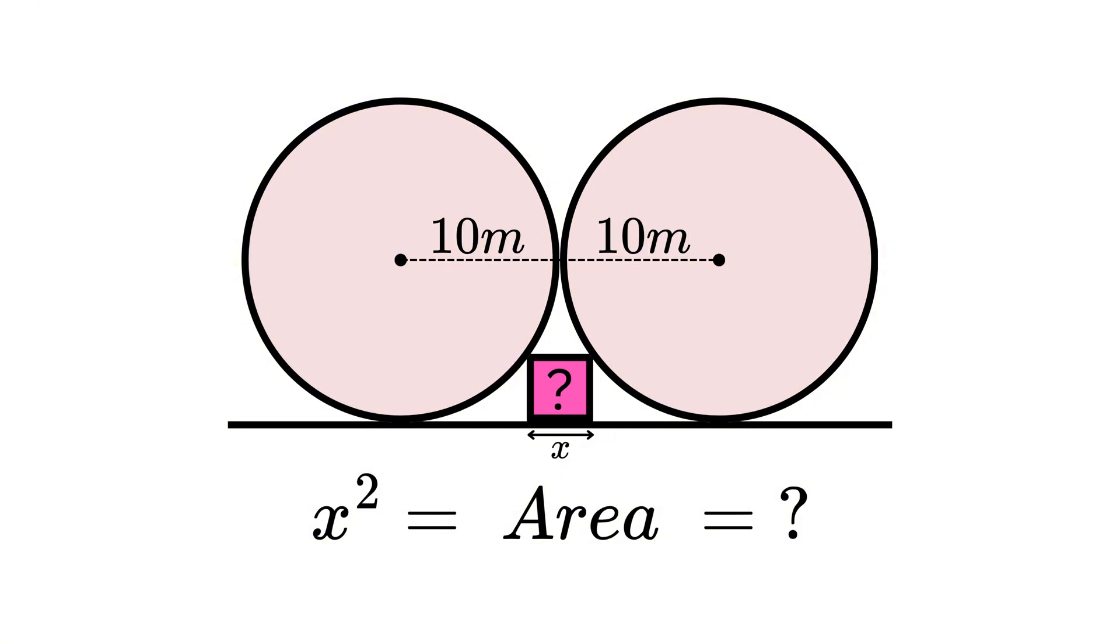The first thing we're going to do is draw a line from the midpoint of the circle to where it touches the square and call it 10 meters because it's a radius. We can draw another radial line directly down from the center point, which is also 10 meters long, and a third line from where the circle meets the square to where it meets the radial line. These two lines are perpendicular, so we can label it with a right angle.